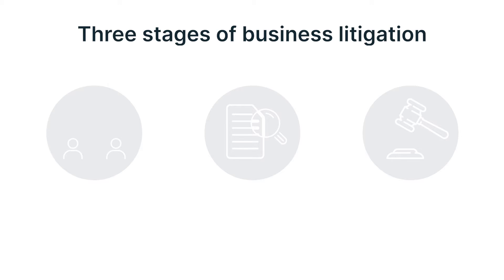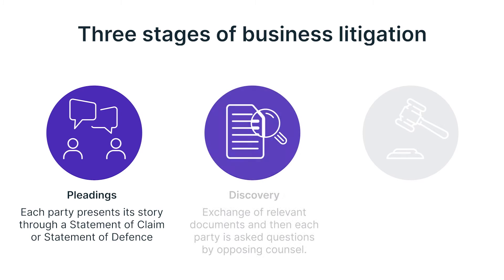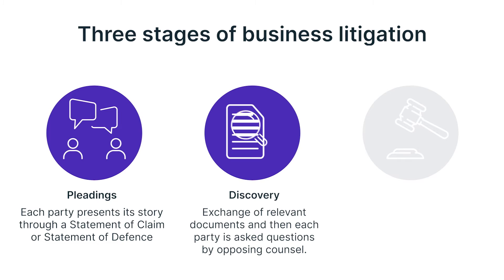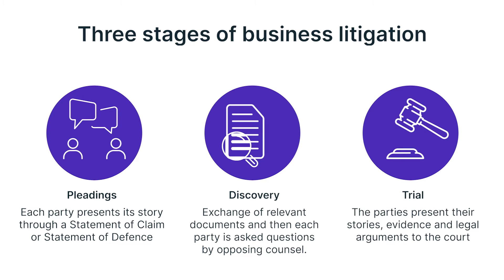Business litigation and litigation more broadly involves three different stages. There is the pleading stage, where the parties exchange statements of claim and statements of defense, which set out their position and their story. There's then the discovery stage, where the parties exchange relevant documents and each party gets asked questions about their story and documents from opposing counsel. The third stage is where you take your evidence, applicable legal principles, and theory, and go to trial — that's where the judge rules on your case.